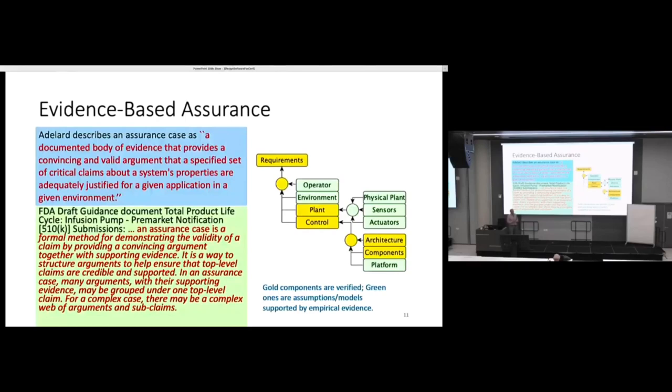Let's go to evidence-based assurance and what we can actually do concretely to do this design for assurance. These two definitions are given for what a safety case or assurance case is. One from Adelaide, which has been widely quoted, a documented body of evidence that provides a convincing and valid argument that a specified set of critical claims about a system's properties are adequately justified for a given application in a given environment. This is the one that Haddon Cave himself quoted. I don't know about you, but I read things like this and think, I don't know, this hasn't added a bit of information to what I might have known before. These are just words.